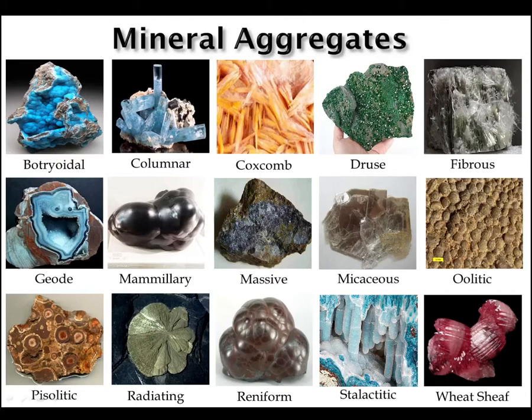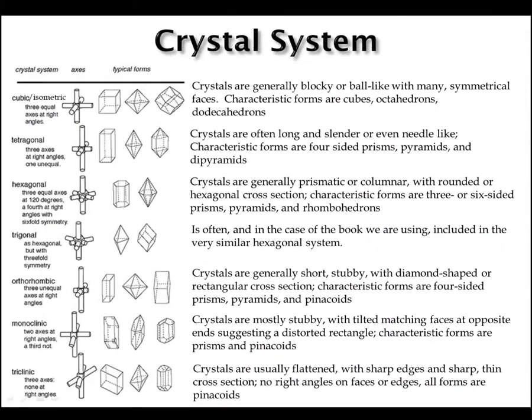This slide shows common mineral aggregates and the respective name designation commonly referred to in mineral descriptions — a great graphic to refer back to when identifying minerals. All minerals actually fall into six basic crystal systems because crystals always grow according to simple mathematical laws. The six systems are cubic or isometric, tetragonal, hexagonal, orthorhombic, monoclinic, and triclinic. This slide shows seven crystal systems, but trigonal is commonly grouped with hexagonal. We will not review all of the crystal systems, but we wanted you to know they exist and be able to reference the terminology if needed.